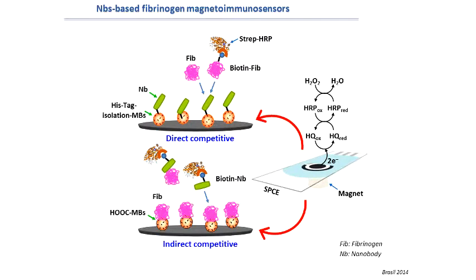We prepared and compared two different immunosensor configurations. In the direct competitive immunoassay, target fibrinogen and biotinylated fibrinogen in solution competed for the binding sites of nanobodies immobilized on histidine-tag functionalized magnetic beads. In the indirect competitive configuration, target fibrinogen and immobilized fibrinogen on carboxylated magnetic beads competed for a fixed amount of biotinylated nanobody in solution.